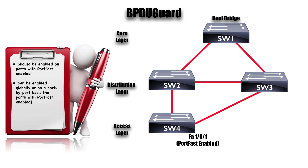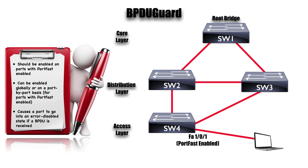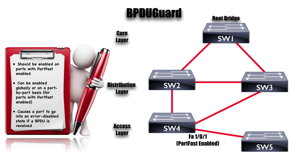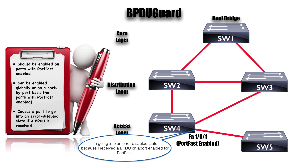This feature is called BPDU Guard, and like PortFast, we can enable it on a port-by-port basis or globally. A port is going to go into an error-disabled state if it sees a single BPDU. For example, here on Switch SW4, we've got interface FastEthernet 1/0/1 enabled for PortFast, and maybe we take a laptop and plug it into that port — that's what we intended PortFast for. But maybe time goes by and we disconnect the laptop, and somebody comes along and plugs in Switch SW5. As switches do, they'll be sending out Bridge Protocol Data Units (BPDUs). When this BPDU goes into Switch SW4, alarms go off — the switch port goes into an error-disabled state because it received a BPDU on a port enabled for PortFast, preventing the Layer 2 topological loop.